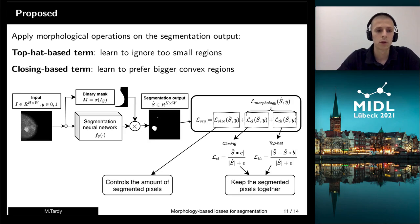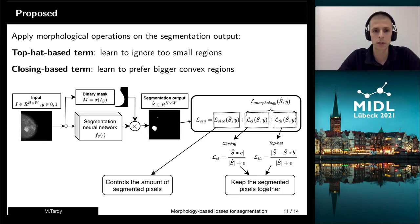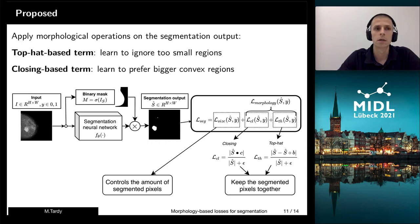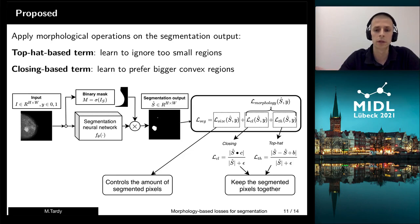We set two of them. First, it is a top-hat-based term, which will train the model to ignore small regions. So we use the result of the top-hat operation and add it to the common loss. In addition, we also add a closing-based term, which will prefer fully-filled regions instead of sparse and holey regions everywhere in the breast.